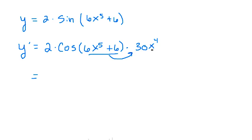Now we'll take this and bring it out front. So 2 times 30 is 60 x to the 4th times cosine of 6x to the 5th plus 6. And there you go, there's the derivative.